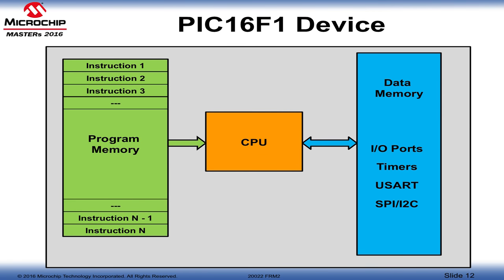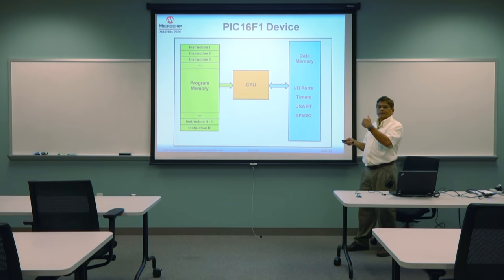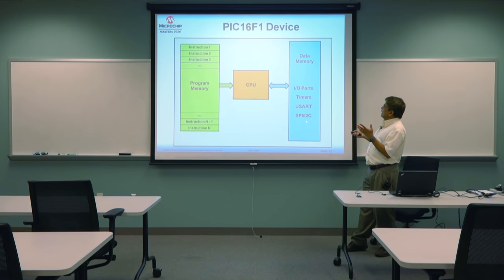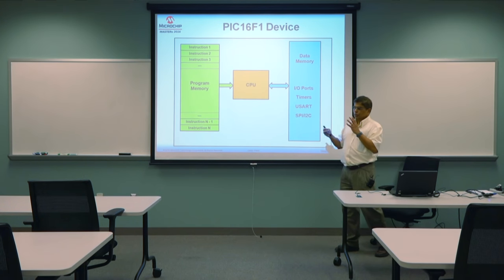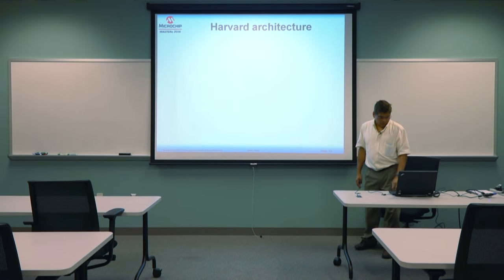Looking at a PIC16F1 device, you have the CPU — the central processing unit — program memory in flash, and data memory. The program memory contains all the instructions, executed one after the other. These instructions manipulate data in data memory, and the peripherals are also part of data memory. Those are the three key components of the architecture.